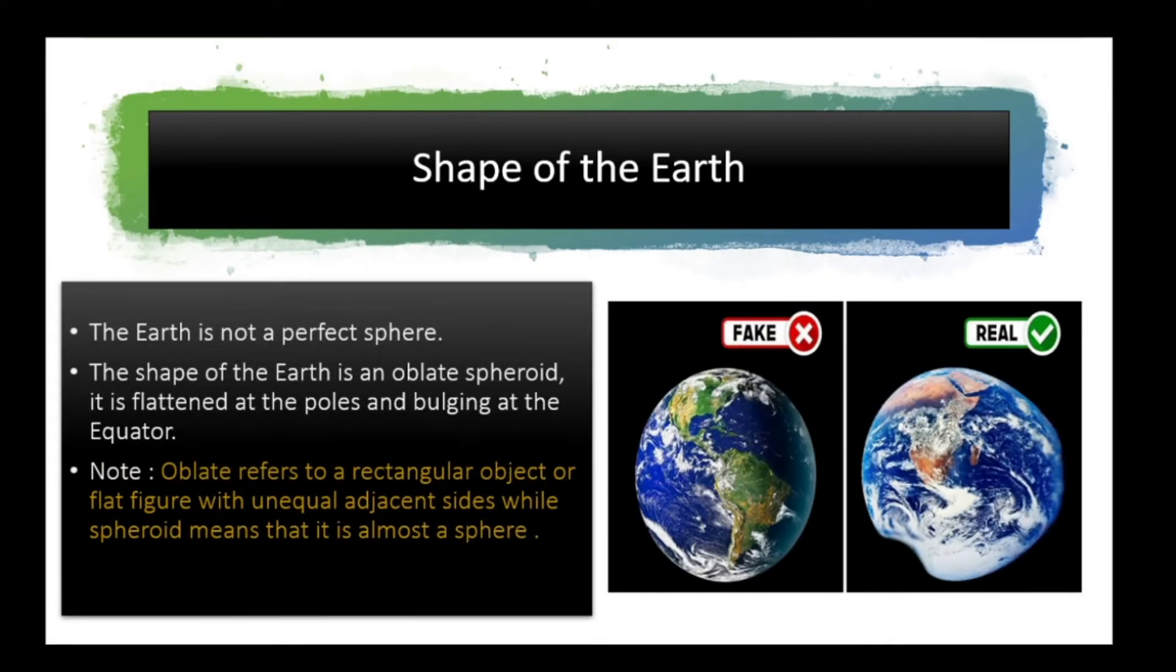So students, let's move forward and discuss the shape of the Earth. The Earth is not a perfect sphere. The shape of the Earth is an oblate sphere. It is flattened at the poles and bulging at the equator.